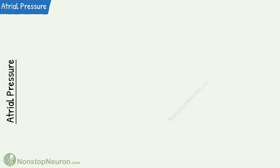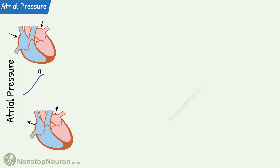Now let's see all this in a graphical form. Again we will start with the atrial contraction, which causes a rise in pressure. This rise is also referred to as the A wave. Then the onset of atrial diastole produces a fall in pressure. This negative wave is also referred to as the X wave.